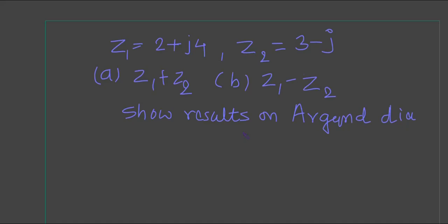Whenever you have a question where you need to show the result on an Argand diagram, and you're given z1 = 2+j4 and z2 = 3-j, here's how to solve it.